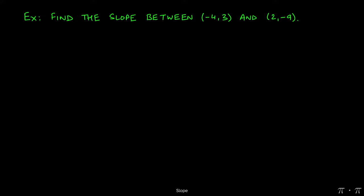Let's say we're asked to find the slope of a line between (-4, 3) and (2, -9). Let's say we assign the first point to be (x₁, y₁), so we assign those coordinates (-4, 3), and we assign (2, -9) to be the second point (x₂, y₂).